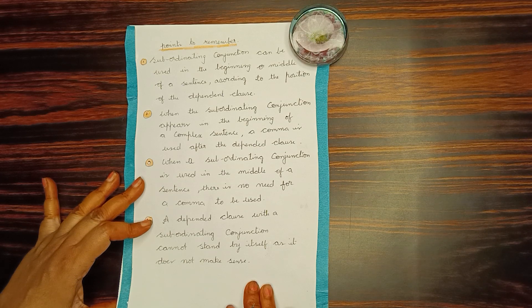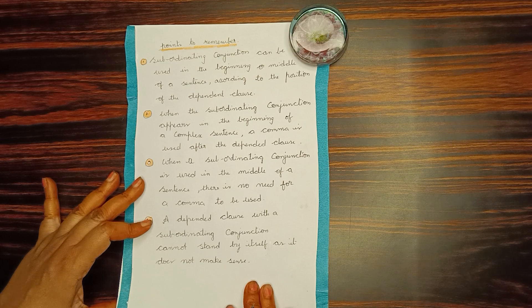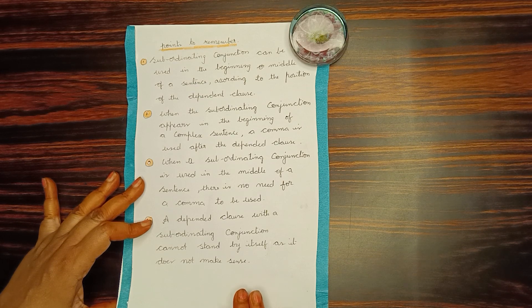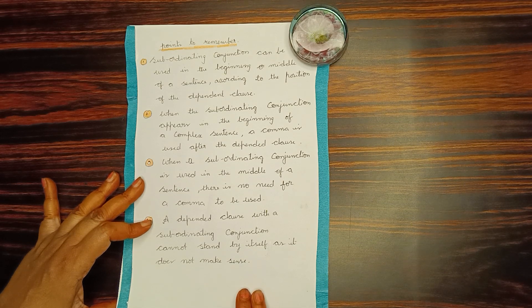Second, when the subordinating conjunction appears in the beginning of a complex sentence, a comma is used after the dependent clause. I once again repeat, when the subordinating conjunction appears in the beginning of a complex sentence, a comma is used after the dependent clause.